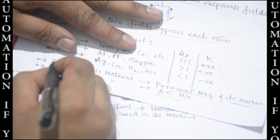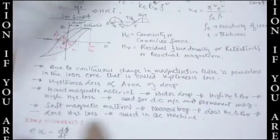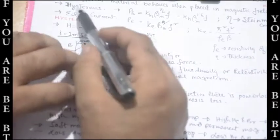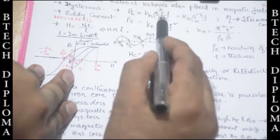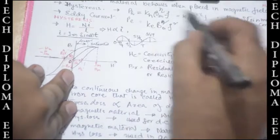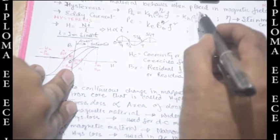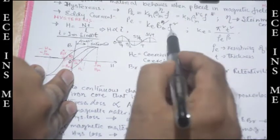In hard magnetic material, hysteresis loss is more; in soft magnetic material, hysteresis loss is less. Hysteresis loss is given by p_H = K_H · B_m^η · F, where B_m is the maximum flux density, η is Steinmetz's constant (generally 1.6), and F is frequency. So p_H = K_H · B_m^1.6 · F — very important. Eddy current loss is given by p_E = K_E · B_m² · F².